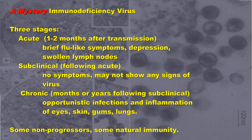This is followed by the subclinical stage, where there are no symptoms and we may not even show signs of virus. This leads to the chronic phase, where we have opportunistic infections, inflammation of the eyes, skin, gums, and lungs. There are some known non-progressors and some natural immunity.